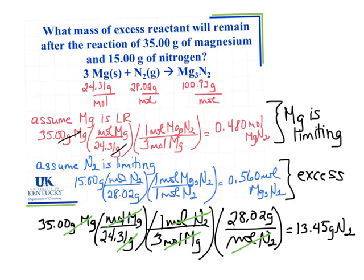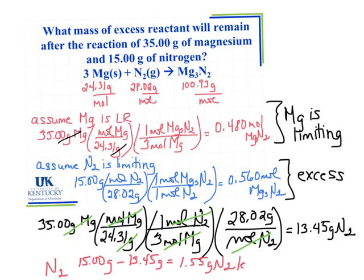The mass of the excess reactant — nitrogen — is found by subtracting. I start with 15 grams of nitrogen and consume 13.45 grams in the reaction with magnesium. That gives me 1.55 grams of nitrogen left over as the excess reactant.